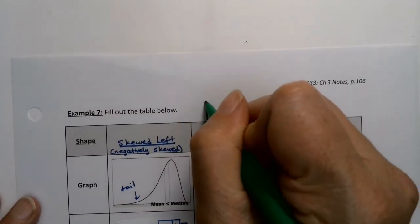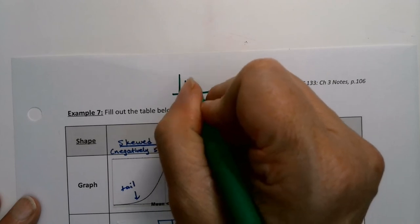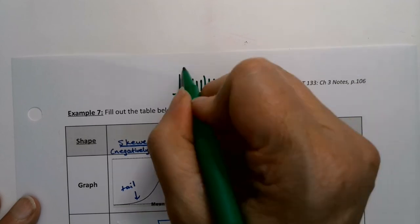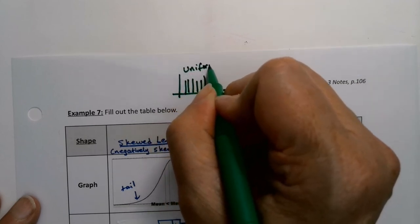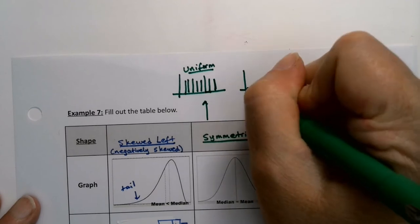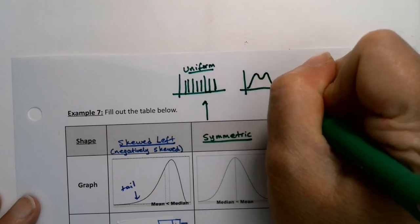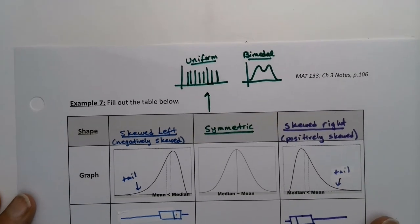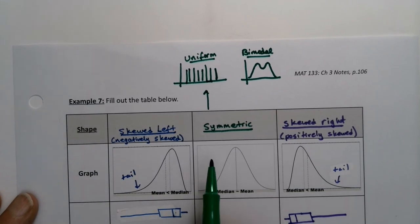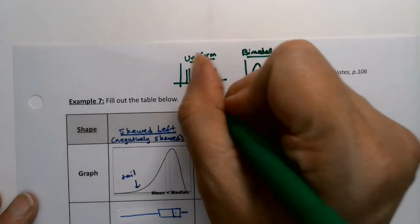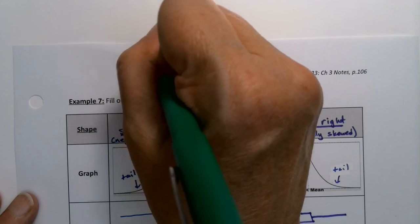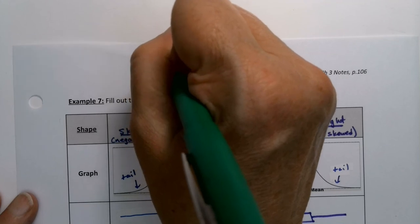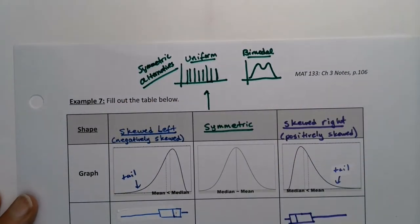Symmetric graphs, you could have a uniform graph. So it's uniform, that is another type of symmetry. You could have a bimodal graph, so it goes up and comes back down. That's another possibility. There are several types of symmetric graphs. So it doesn't have to be normal, just as a side note, symmetric alternatives.